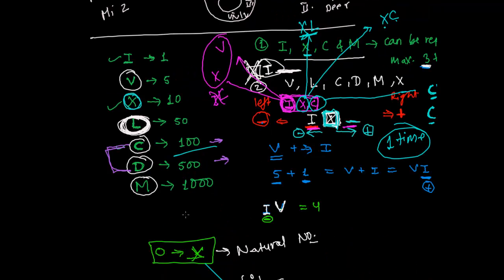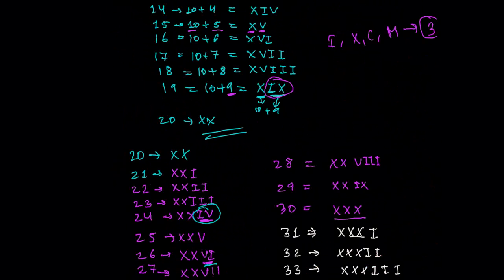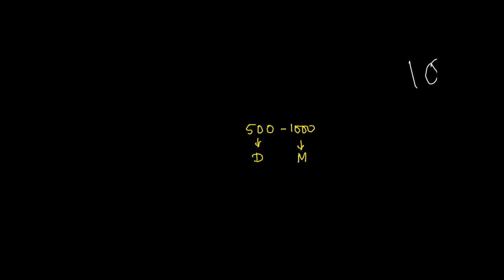In previous videos we learned to write Roman numerals till 100 to 500. In this video now we will be focusing on writing Roman numerals between 500 to 1000. I have already mentioned that 500 is represented by D and 1000 is represented by M. Now in this section we are going to learn between 500 to 1000.